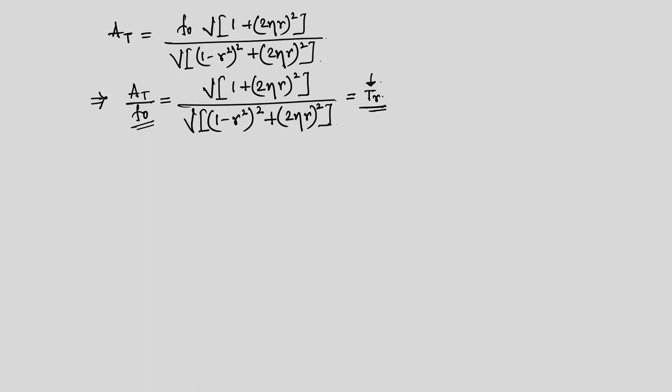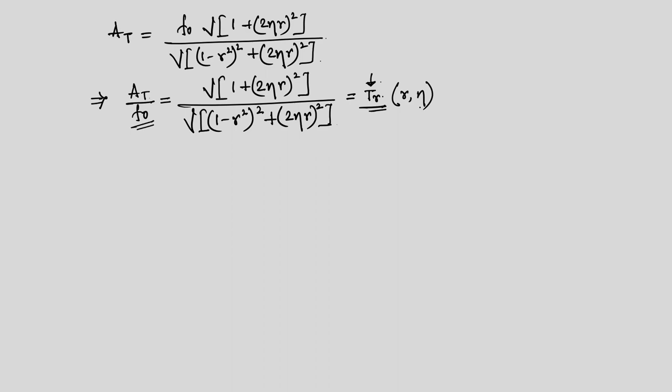The transmissibility TR is a function of r and η. While designing, we must be careful about these parameters and design the foundation to withstand the transmitted force. Remember that r is the frequency ratio, so a machine operating at higher frequency will have a different TR. At r = 0 and r = √2, transmissibility equals 1 regardless of damping.